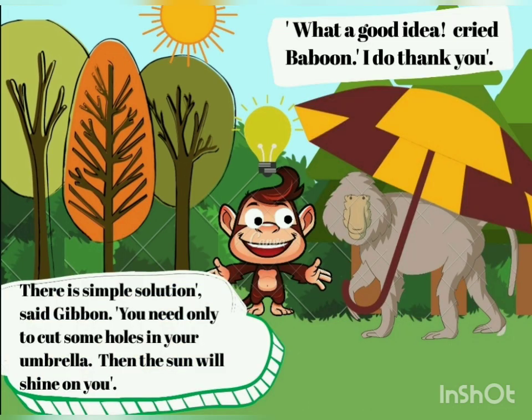To this problem, Gibbon is giving a solution. There is a simple solution, said Gibbon. You need only to cut some holes in your umbrella, then the sun will shine on you. Did you like the idea that Gibbon gave to Baboon? Tell your parents quickly. Baboon is saying, What a good idea! I do thank you! So Baboon is very happy with the idea that Gibbon has given to him.